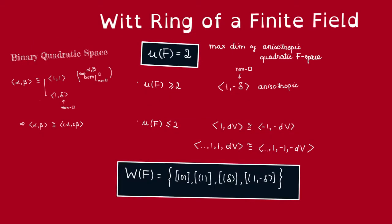So in this video, we are going to give a description of the Witt ring of a finite field. Remember, as I said, for a finite field F, the Witt ring of F is just a set of isometry classes of anisotropic quadratic spaces over F.